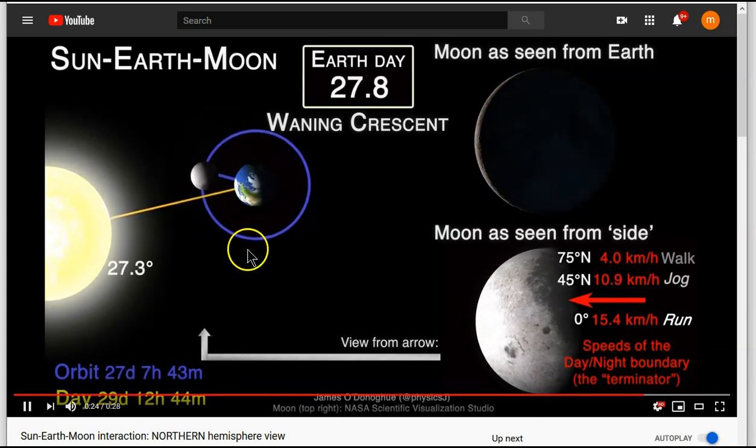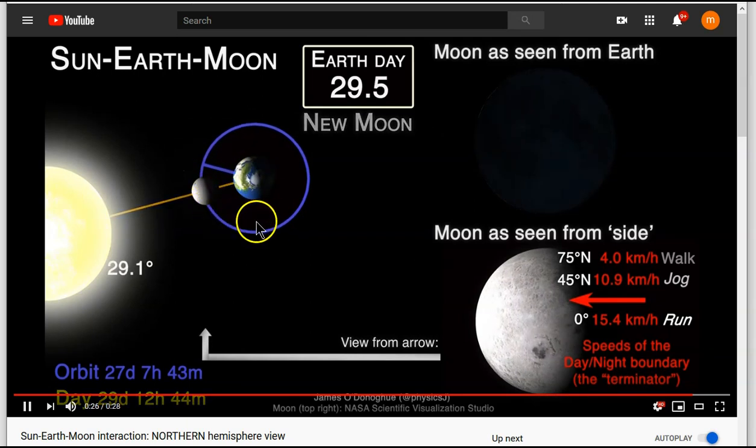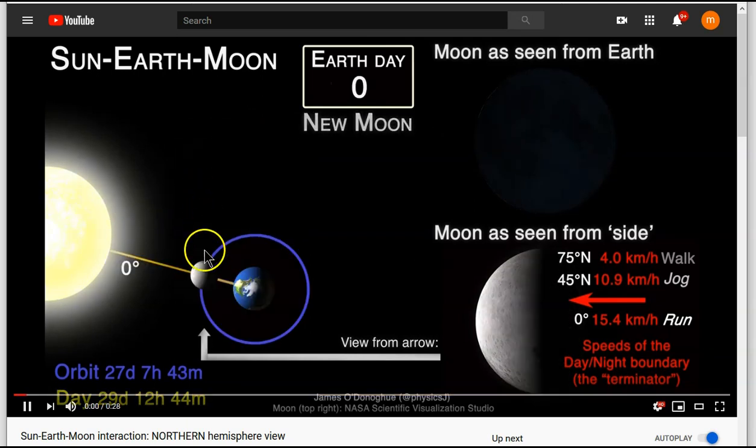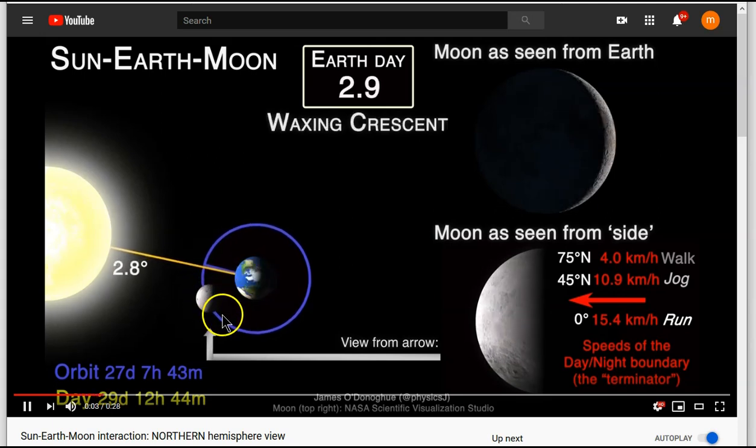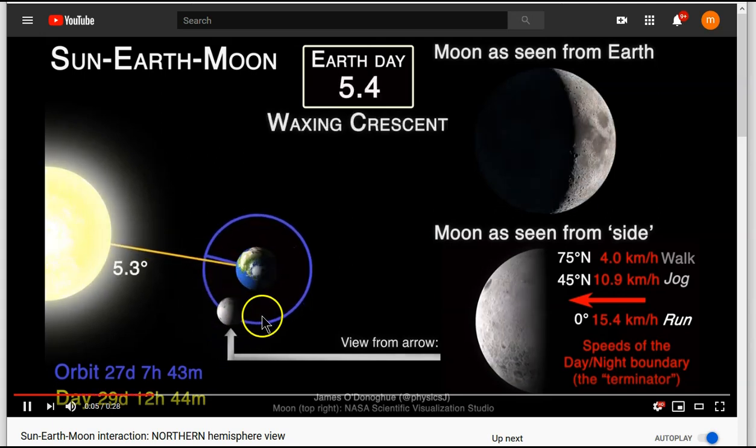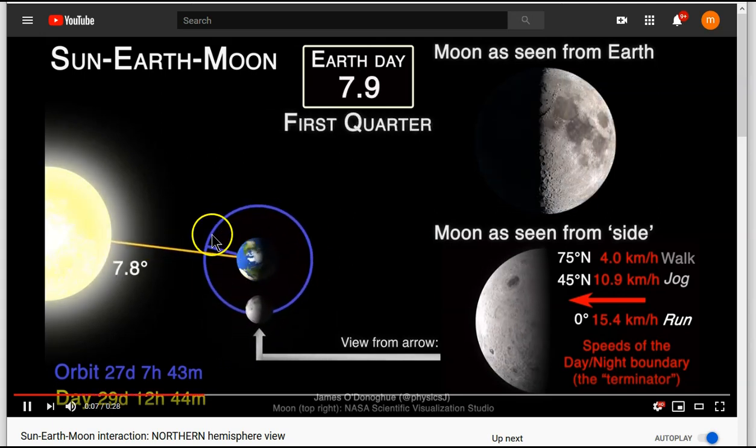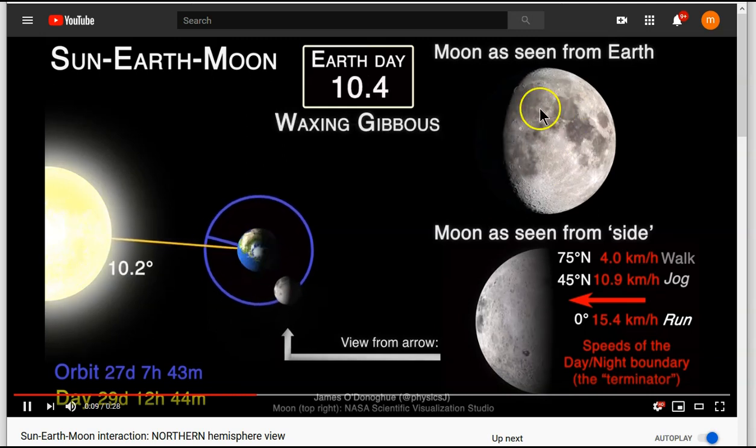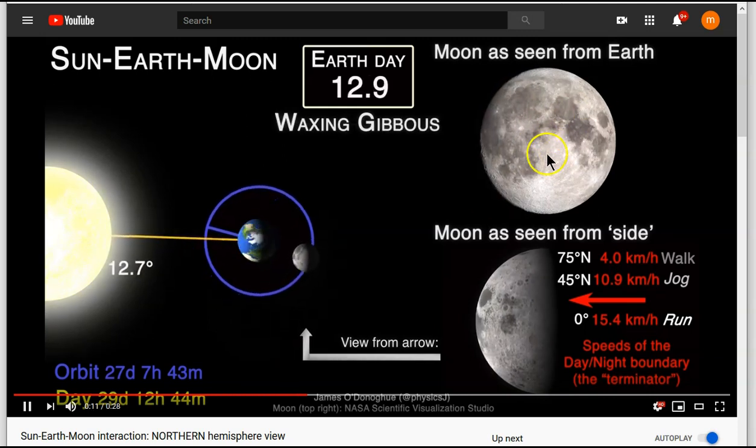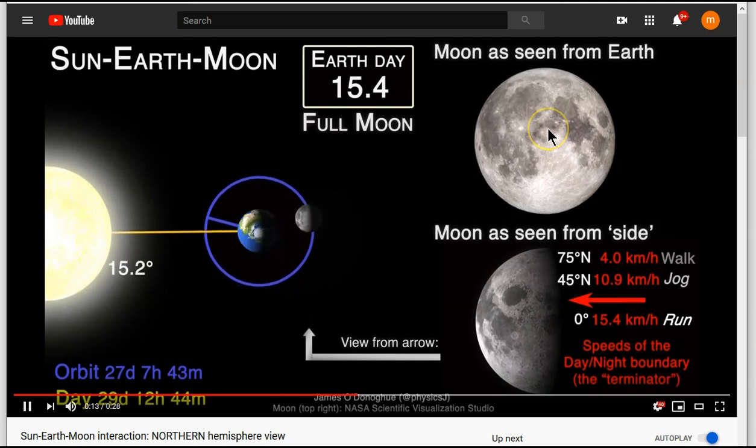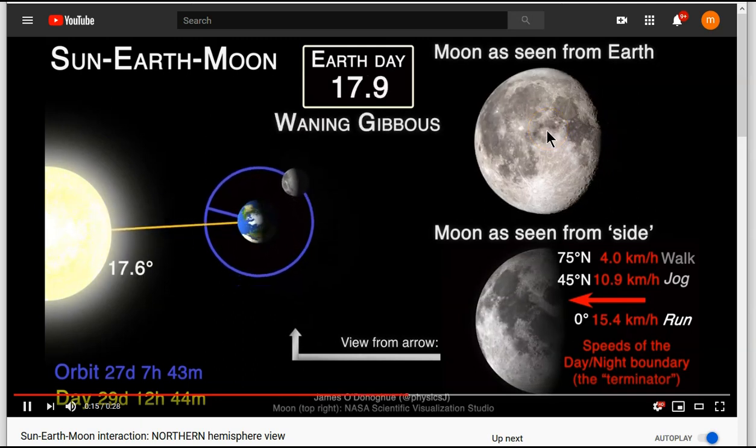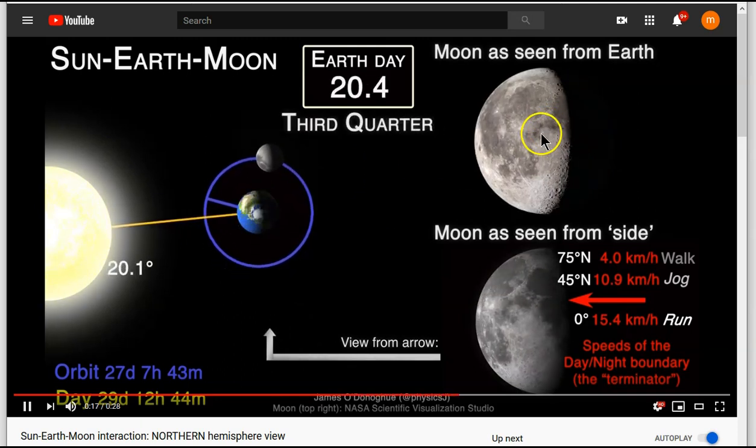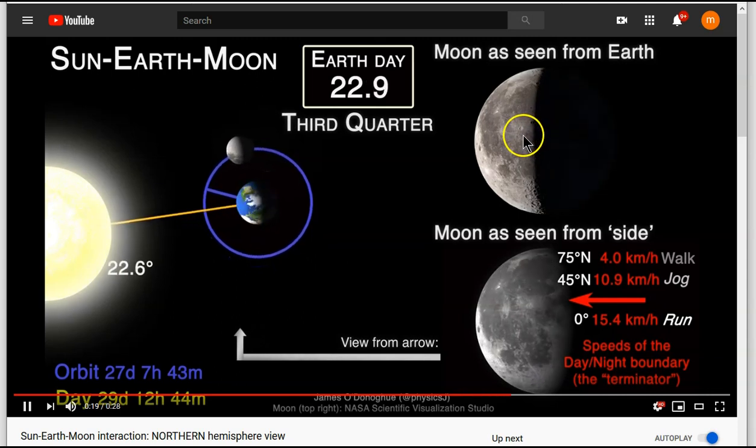And the reason is that as the moon orbits the Earth, it's also spinning. So it rotates about once per orbit. So we see the same face of the moon towards us from Earth. Because as the moon orbits, it's also rotating once per month, basically.